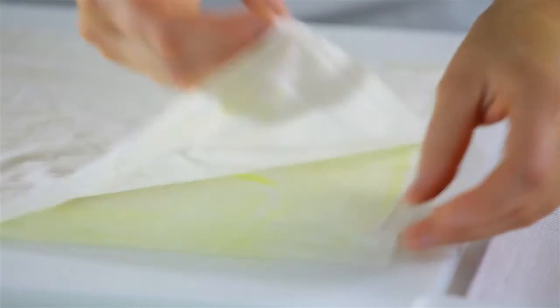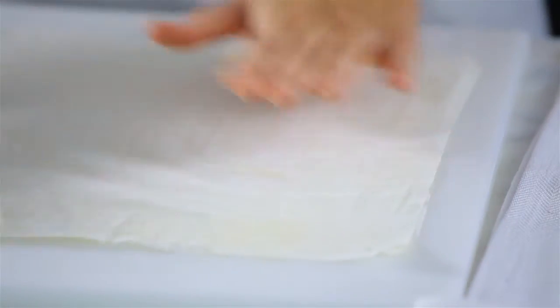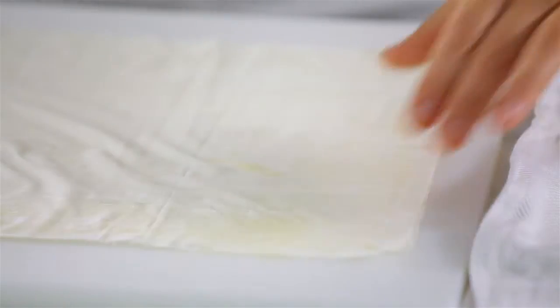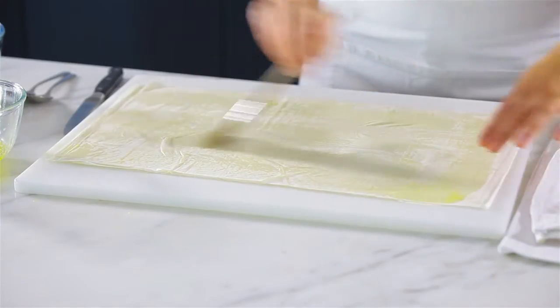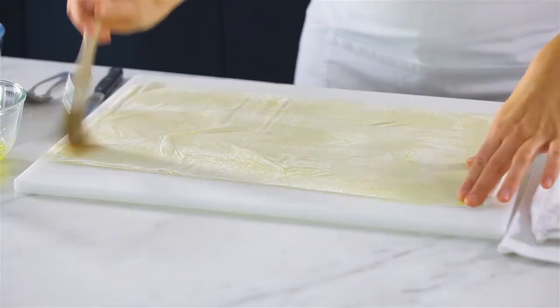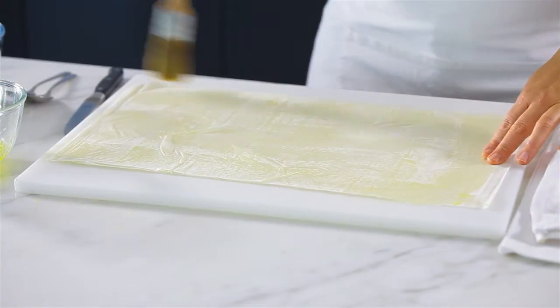Cover with another sheet of phyllo. You don't need to worry too much about any wrinkles, but try to keep it a little bit in line and keep buttering and layering. As you get a few more layers stacked up, it becomes a little bit more stable so it doesn't slide around quite as easily.